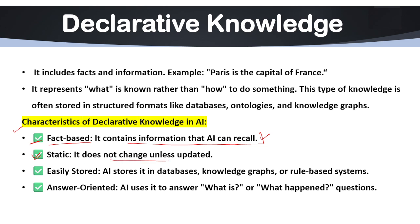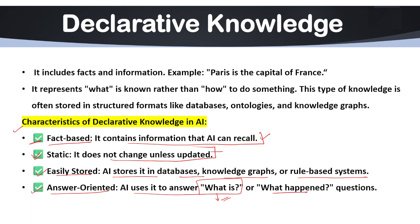Another characteristic is that it is static — it does not change unless updated. Its rules, information and knowledge are always fixed. It is also easily stored: AI stores it in databases, knowledge graphs or rule-based systems. Another characteristic is answer-oriented: AI uses it to answer 'what is' questions, such as 'what is the time?' or 'what is the capital of India?'